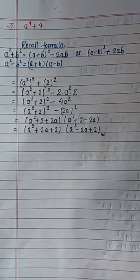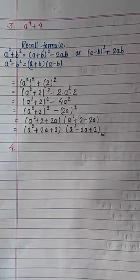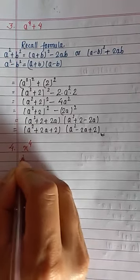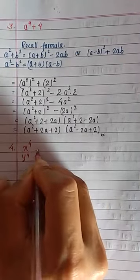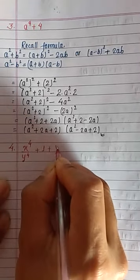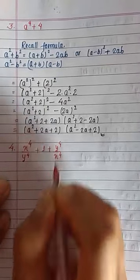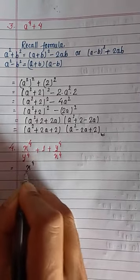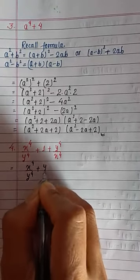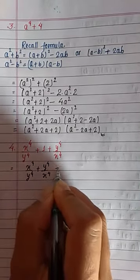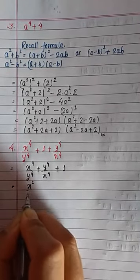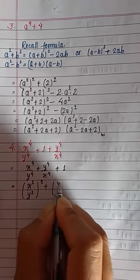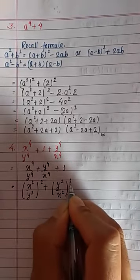Now question number 4. Question number 4 is slightly different — it's in fraction form: x to the power 4 upon y to the power 4, plus 1, plus y to the power 4 upon x to the power 4. As in the previous question, we will arrange the two terms with power 4 and bring them together to use the a square plus b square formula.